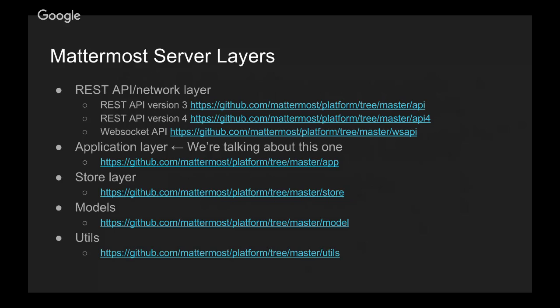We have two current API versions. The current version is API version 3, and we're moving on to version 4. We also have our WebSocket API, which has recently been moved to its own package. And then we have the application layer itself, the store layer, and models and utils packages — models being all our data models, and utils being general utility functions and things like that.